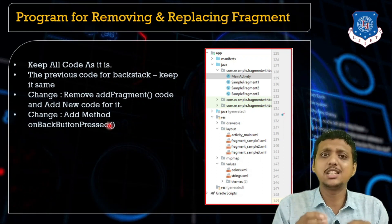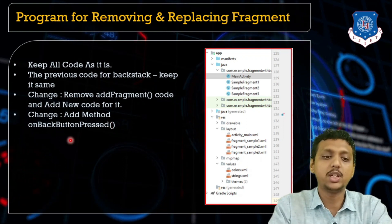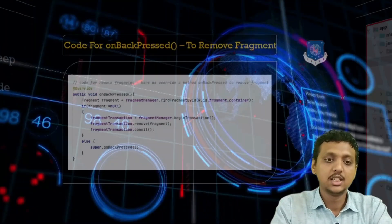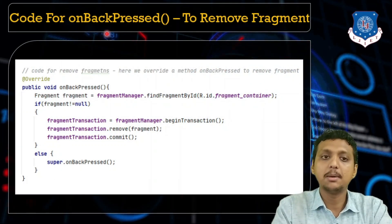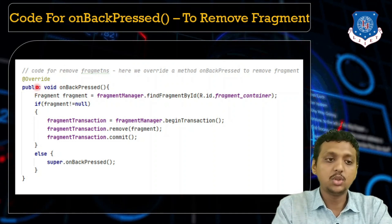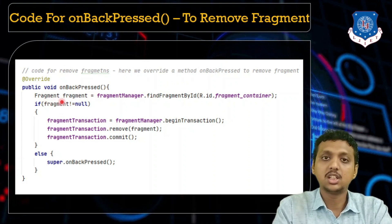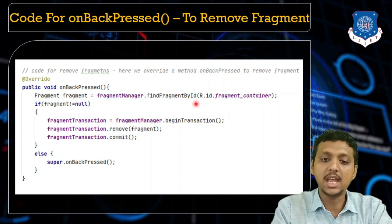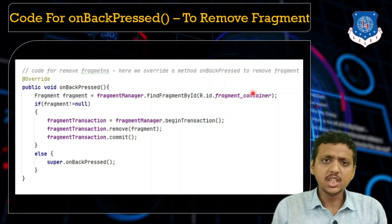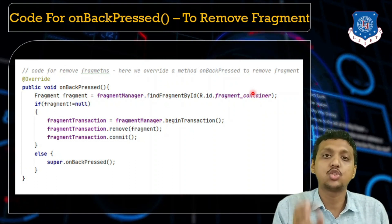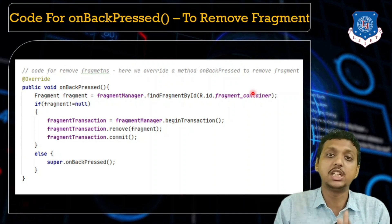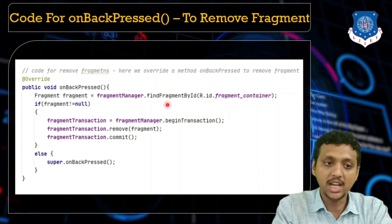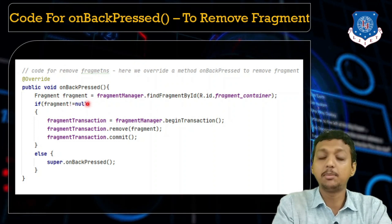We are overriding the onBackPressed method. The project structure remains the same — we are not adding anything else. In the overriding onBackPressed method, we create a general Fragment object: fragment = fragmentManager.findFragmentById(R.id.fragment_container). If you remember, in activity_main.xml we have a fragment container, which is a FrameLayout ID, on which we place our various fragments.